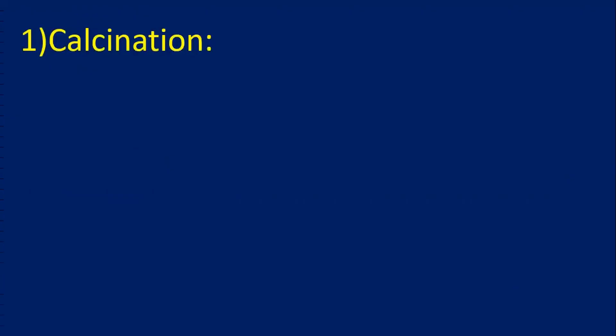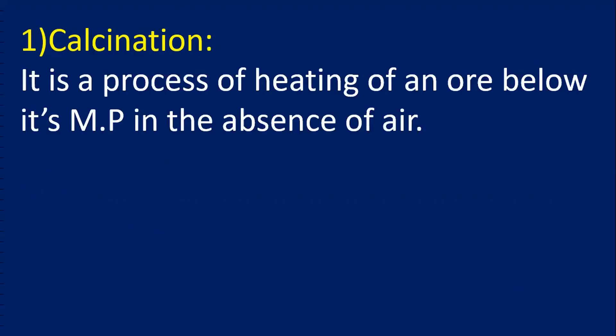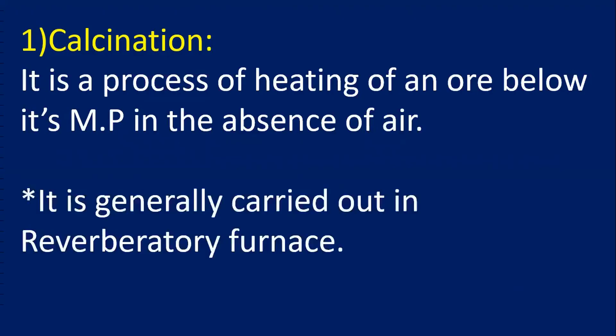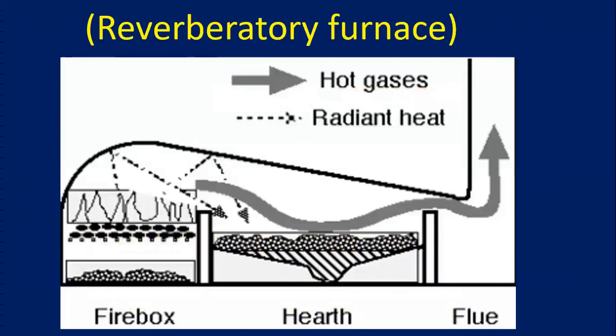First one is Calcination. Calcination is a process of heating of an ore below its melting point in the absence of air. It is generally carried out in a reverberatory furnace. The bottom part is called hearth in which ore is taken. The firebox has fuel that produces heat. The ore gets heated and impurities leave as hot gases.